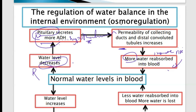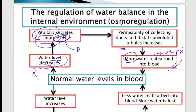The pituitary gland secretes more ADH. What is the function of ADH and where does it work? ADH works in the kidney, where the nephrons are. It brings about high permeability. When you talk about permeability, we are talking about allowing some substances to go through something. So ADH causes the nephron to become highly permeable.